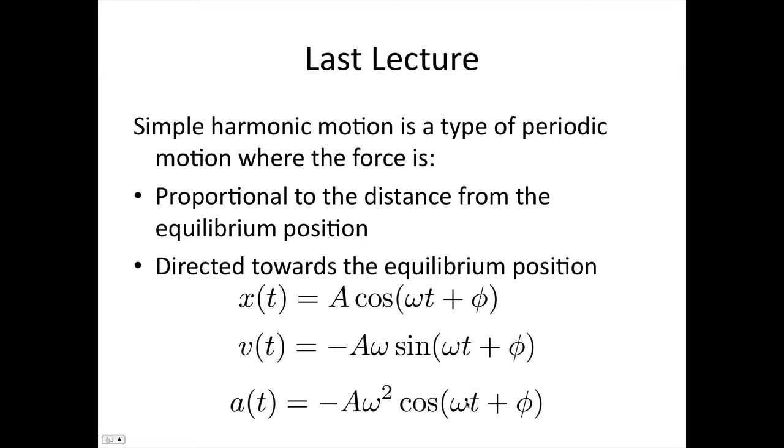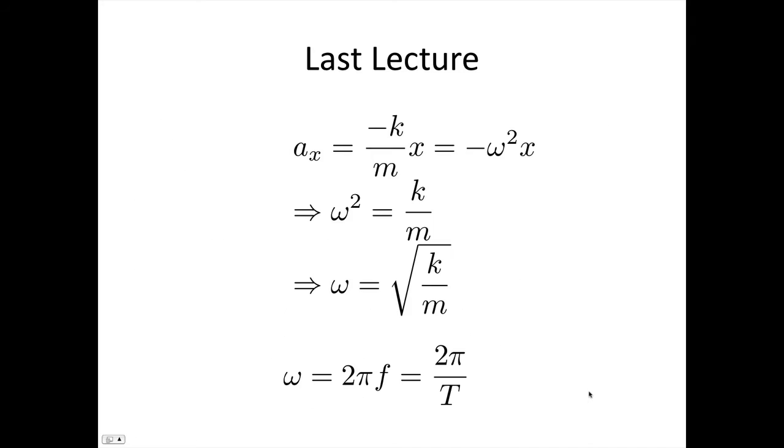So you can see from this line that the acceleration is equal to minus A cos(ωt), which is just x, so it's minus ω²x. So the acceleration, according to Hooke's law for a spring, is minus k/m x. And for simple harmonic motion, this is equal to minus ω²x. So ω² is equal to k/m, and so ω is equal to √(k/m).